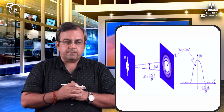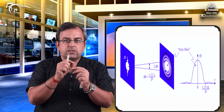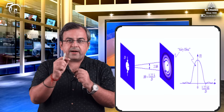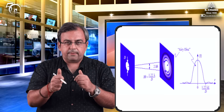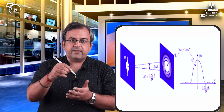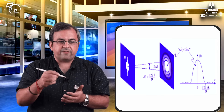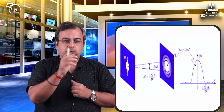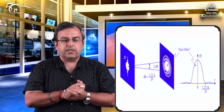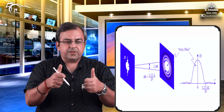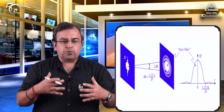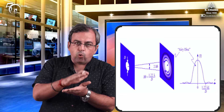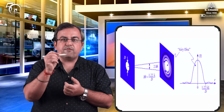The image of a point source is not a point, but has a definite size and is surrounded by a diffraction pattern. When light from a point source passes through a circular aperture, the diffraction pattern consists of a central bright disc surrounded by alternately dark and bright diffraction rings. If there are two point sources very close to each other, the diffraction patterns formed by overlapping are very difficult for us to separate out.